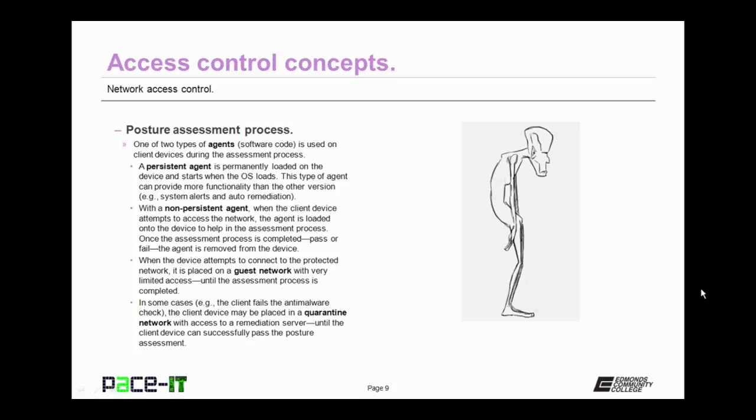It's time to move onto the posture assessment process. One of two types of agents, think software code, is used on client devices during the assessment process. It could be a persistent agent, which is permanently loaded on the device and starts when the operating system loads. This type of agent can provide more functionality than the other version. A persistent agent is more likely to be used if that device regularly connects to the network.